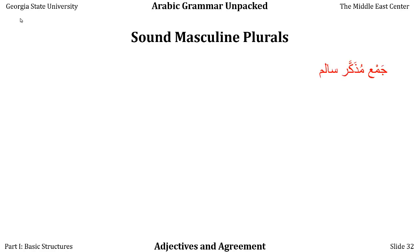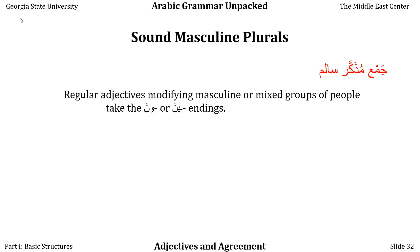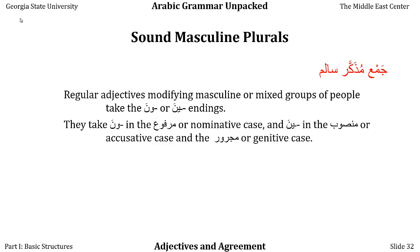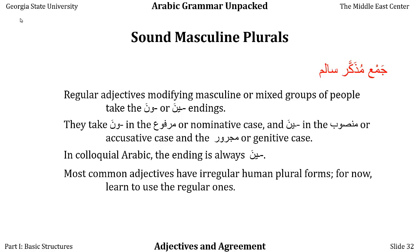Let's look at sound masculine plurals more fully. Jama' mudhakkar salim: jama' is plural, mudhakkar is masculine, salim means safe or sound — meaning regular. These are regular adjectives modifying masculine or mixed groups of people. If there's even one man in the group, it counts as masculine. They take the -un ending in the marfu' (nominative) case and -in in the mansub (accusative) and majrur (genitive) cases. In colloquial Arabic the ending is always -in; in fusha it's often -un. Most common adjectives have irregular human plural forms — for now, learn to use the regular ones, and substitute in the irregular ones as we learn them.